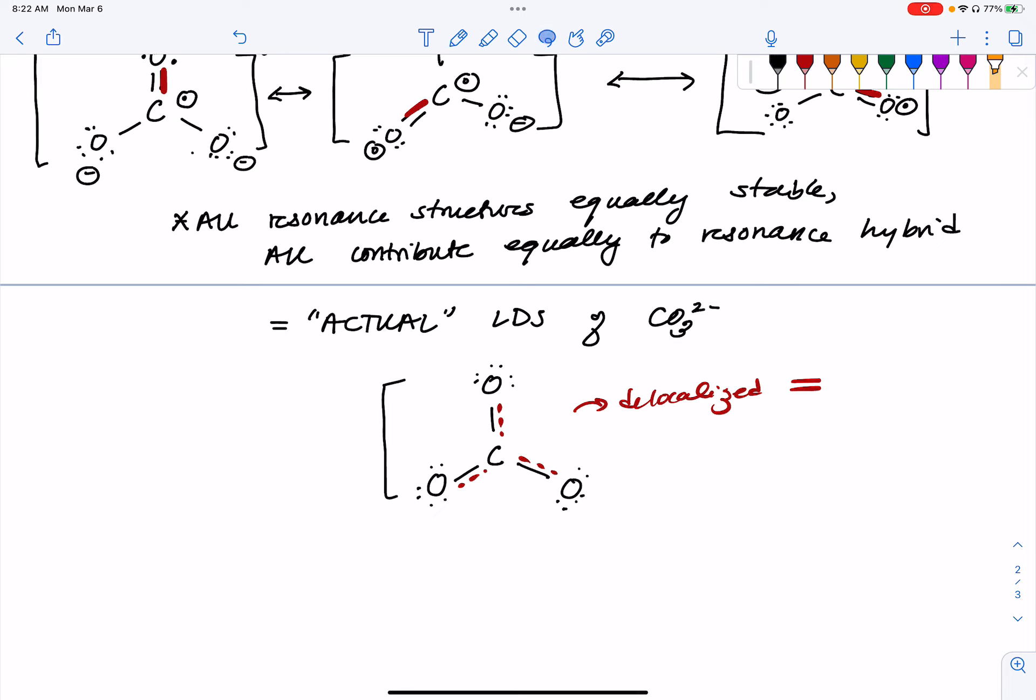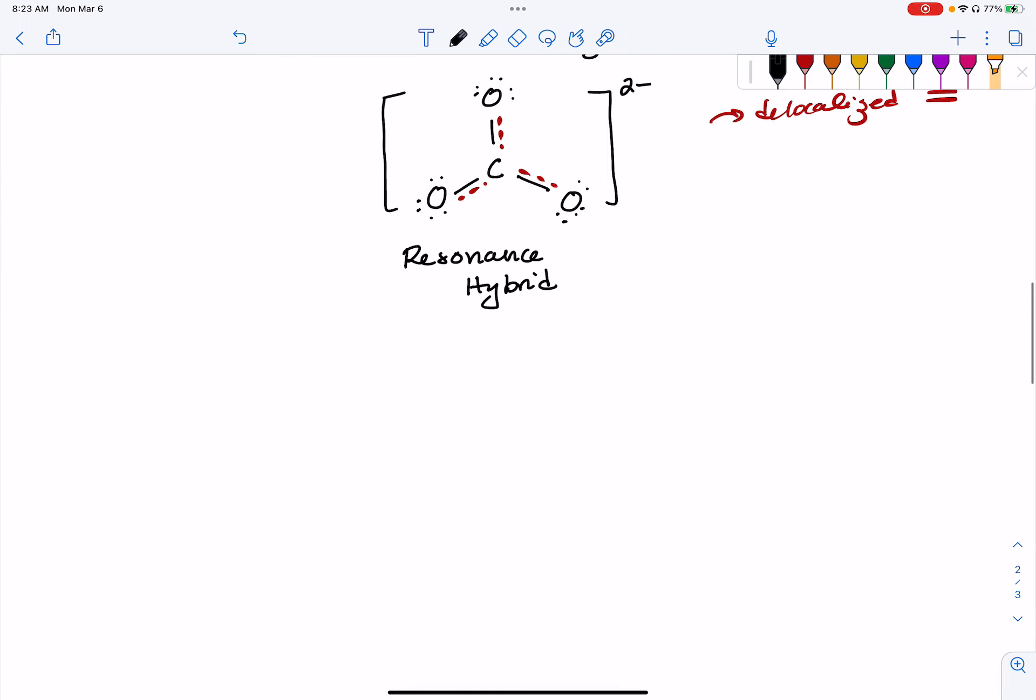So if I were to draw the quote-unquote actual Lewis dot structure of carbonate, because I can't pick one that's the most stable, they're all equally stable. Then I would be drawing the resonance hybrid. And the case for compounds that don't have all equivalently stable resonance structure is similar.